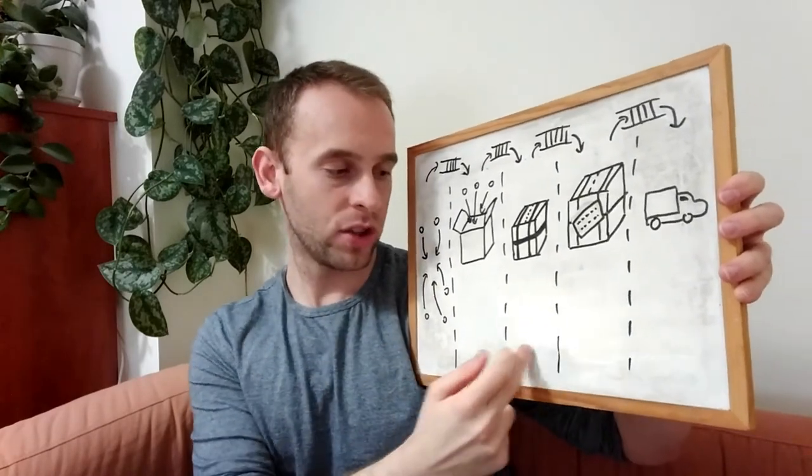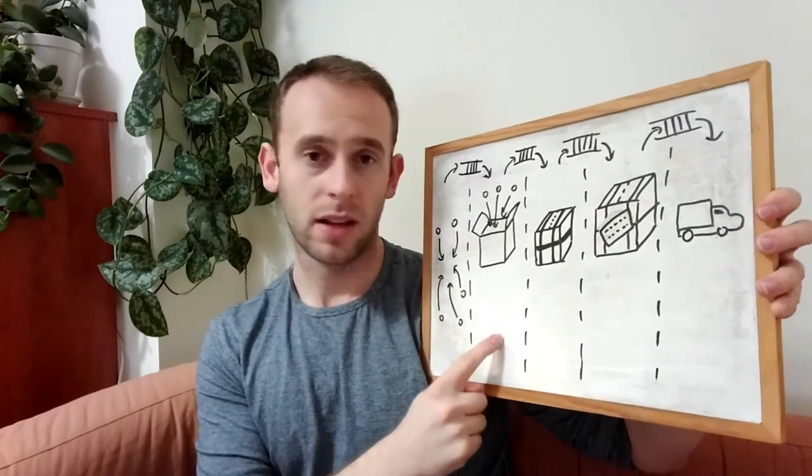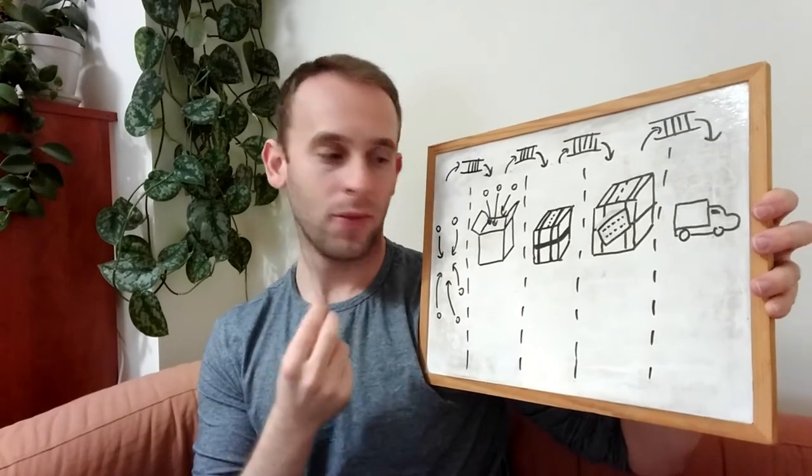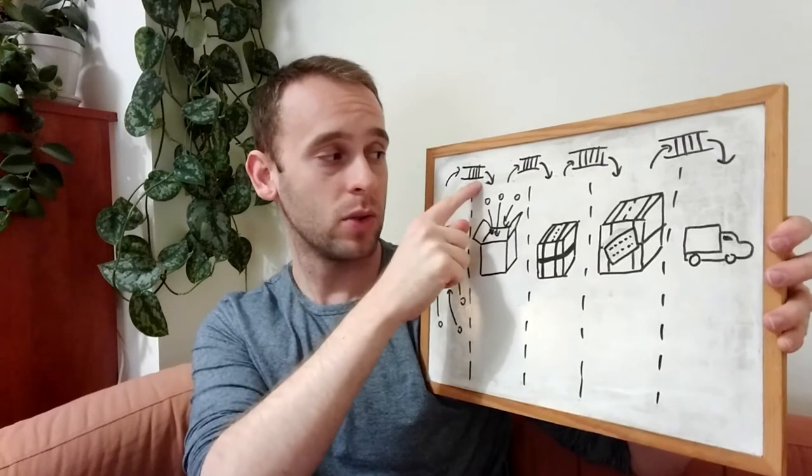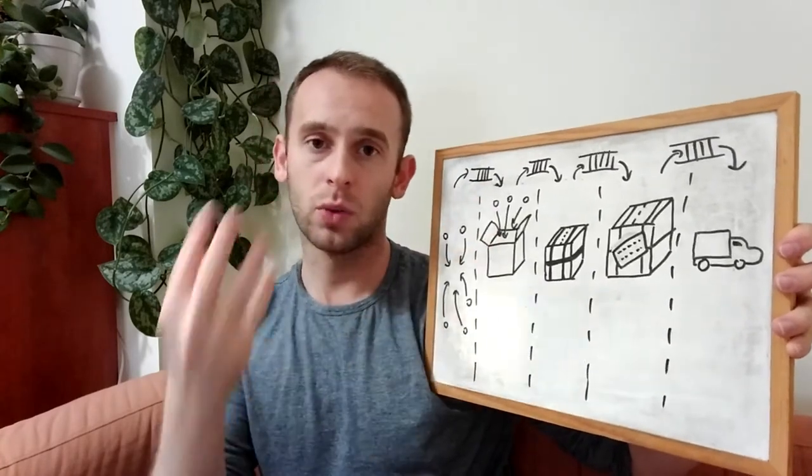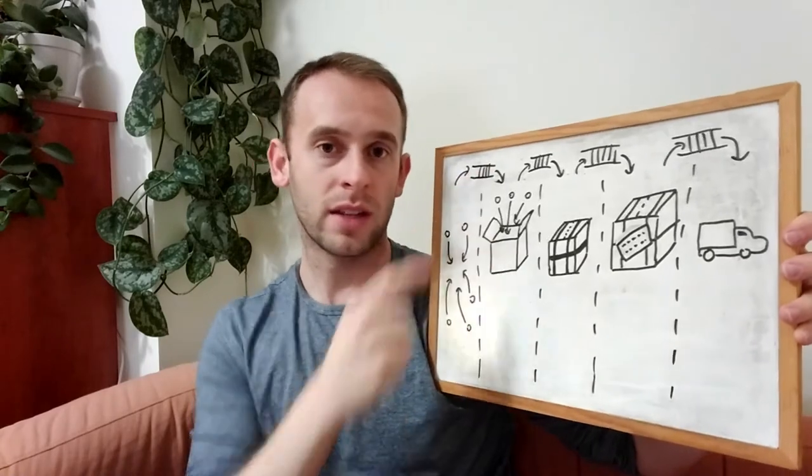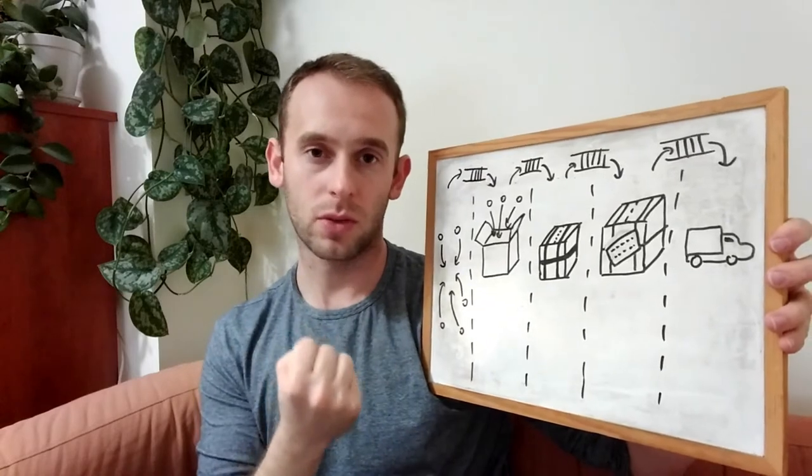But if for example, each and every step in the process takes one second, but this process, the second one, takes two seconds, if we put an item every second, what will happen is this queue will be blown up because every second this queue gets an item, but only every two seconds an item is pulled from this queue.